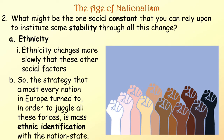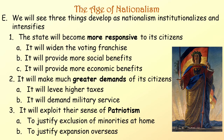What might be one social constant that you can rely upon to institute some stability throughout all of this change? Ethnicity. Ethnicity changes more slowly than those other social factors. So the strategy that almost every nation in Europe turned to in order to juggle all these forces was mass ethnic identification with the nation-state. We will see three things develop as nationalism institutionalizes and intensifies. Number one: the state will become more responsive to its citizens.